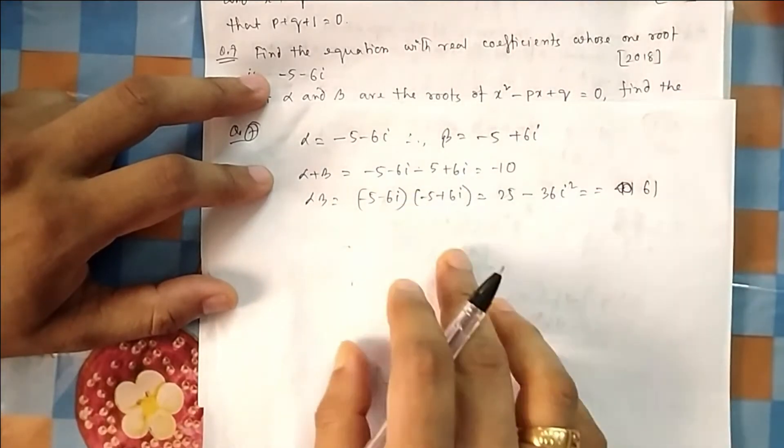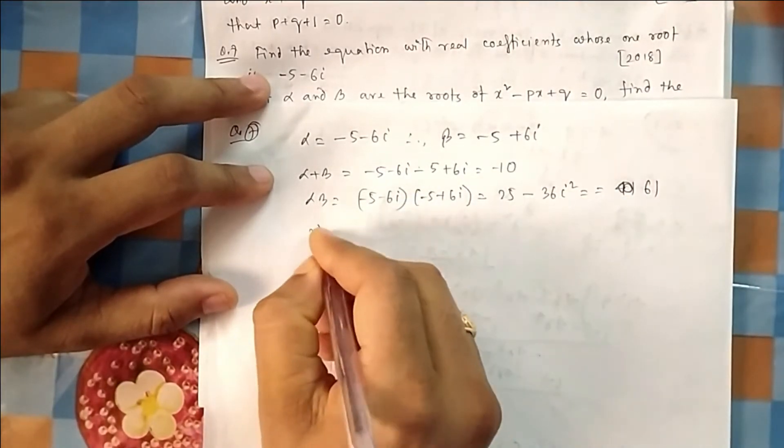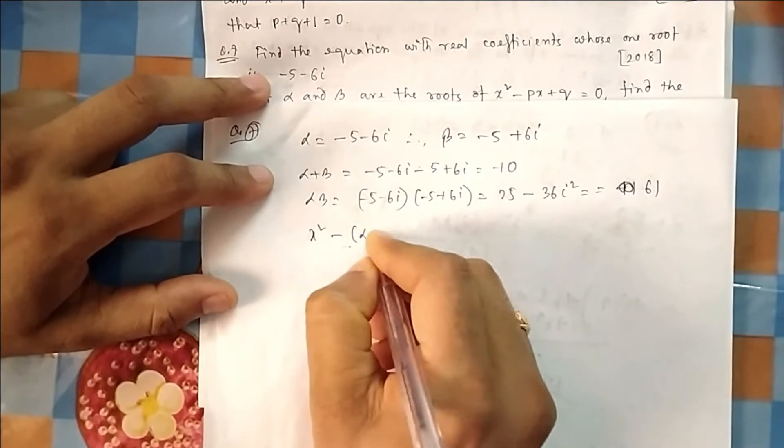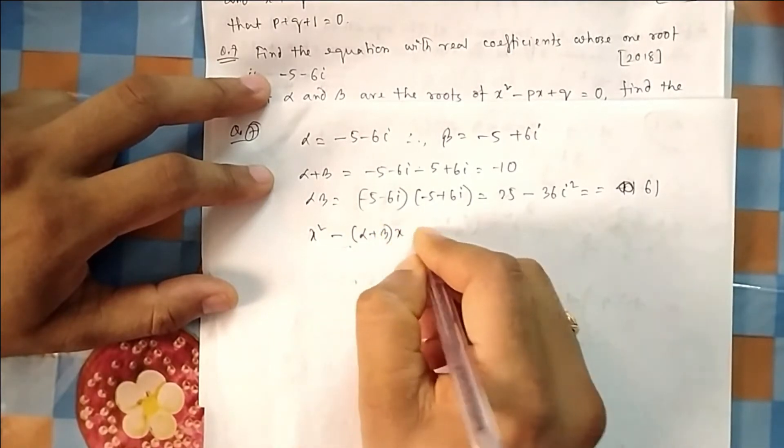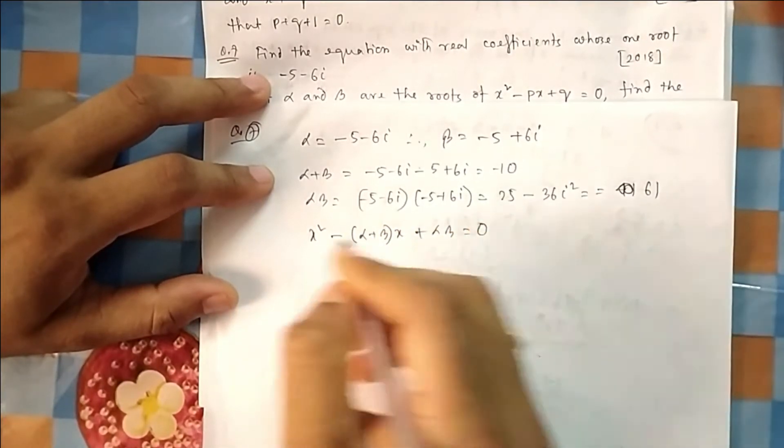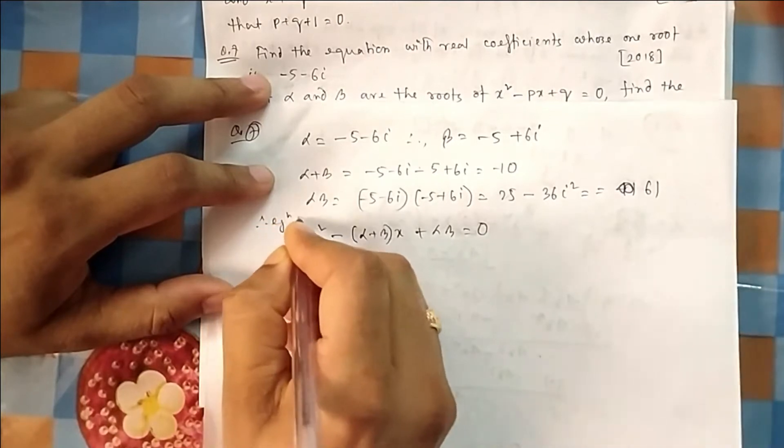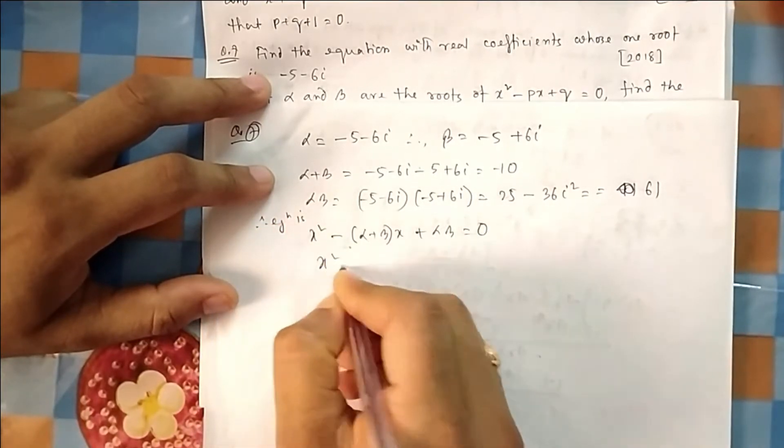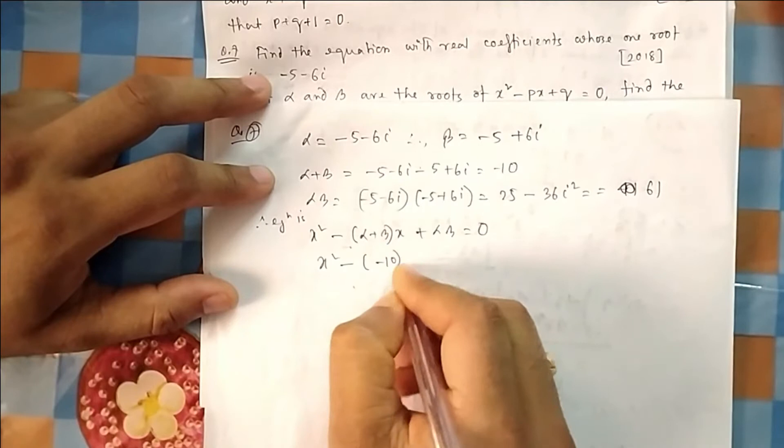So finally, if you have this, this and this, so you would actually, you know, therefore the equation is, sum of the roots x² minus this one. In theory you will find it. Therefore the equation is, you can write it, the equation is x² - (-10)x + 61 = 0.